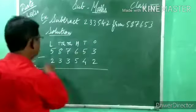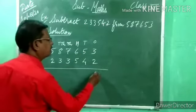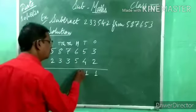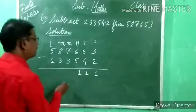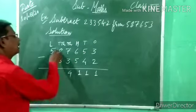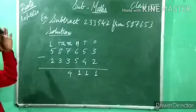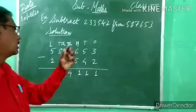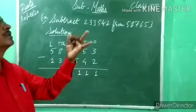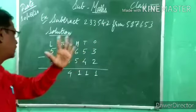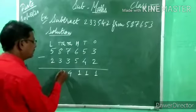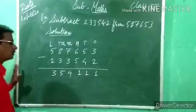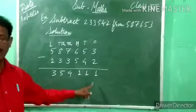Now subtract column wise: 3 minus 2 = 1; 5 minus 4 = 1; 6 minus 5 = 1; 7 minus 3 = 4; 8 minus 3 = 5; 5 minus 2 = 3. So your answer is 3,54,111.